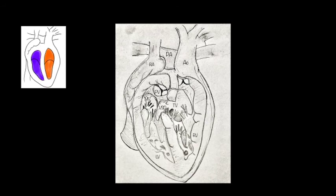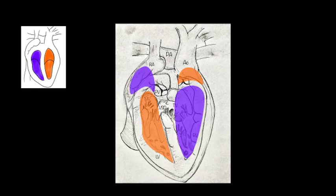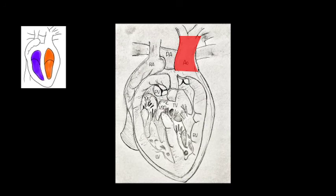The CCTGA is a complex congenital heart defect defined by atrioventricular and ventriculo-arterial discordance. In its simplest form, it presents without any structural abnormalities in S-L-L configuration. The atria are in normal position with the left ventricle on the right side, and the great vessels are L-malposed with the aorta anterior and to the left of the main pulmonary artery. The interventricular septum lies in a straight anterior plane with side-by-side ventricles.